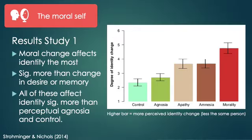What the researchers found, and what we see in figure one, is that moral change affects identity significantly more than changes in desires, apathy, or memory and amnesia. And all of these affect identity significantly more than perceptual change, agnosia, and the control.